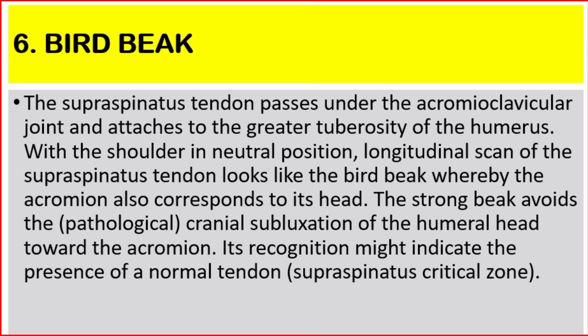Number six: bird beak. The supraspinatus tendon passes under the acromioclavicular joint and attaches to the greater tuberosity of the humerus. With the shoulder in neutral position, longitudinal scan of the supraspinatus tendon looks like a bird beak, whereby the acromion corresponds to its head. The strong beak avoids the pathological cranial subluxation of the humeral head towards the acromion. Its recognition might indicate the presence of a normal supraspinatus tendon critical zone.